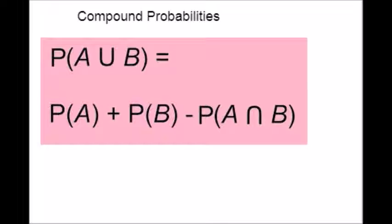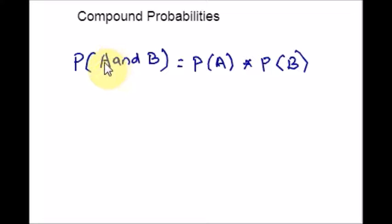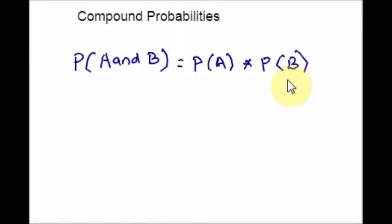Now let us see the formula to compute compound probability problems. In the cases when the events are independent, the compound probability can be calculated just by multiplying the probabilities of the two events directly. Let A and B be two independent events. Then, probability of A and B is nothing but probability of A times probability of B.